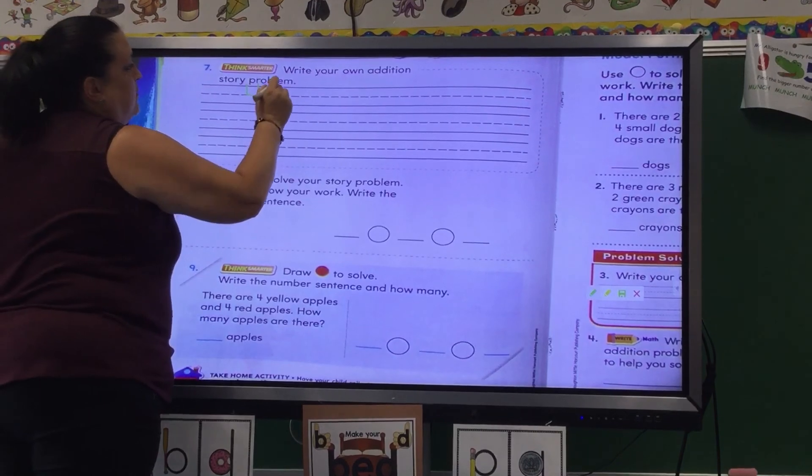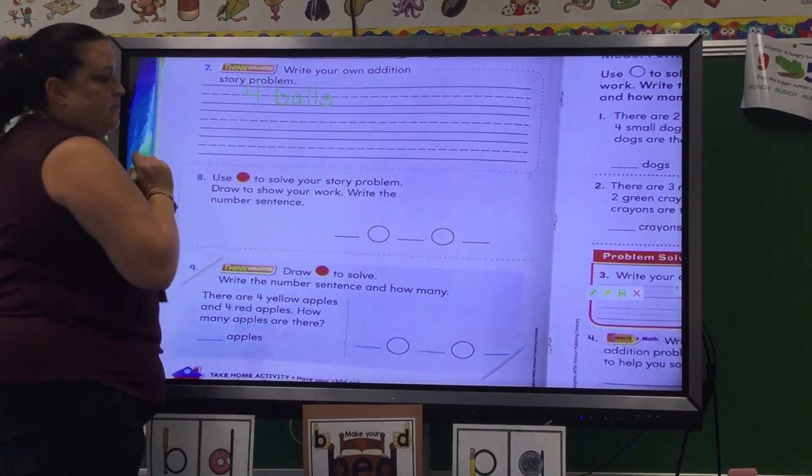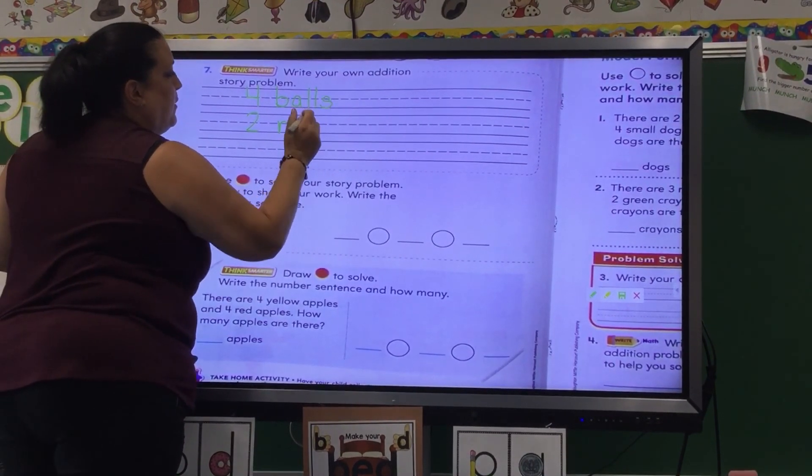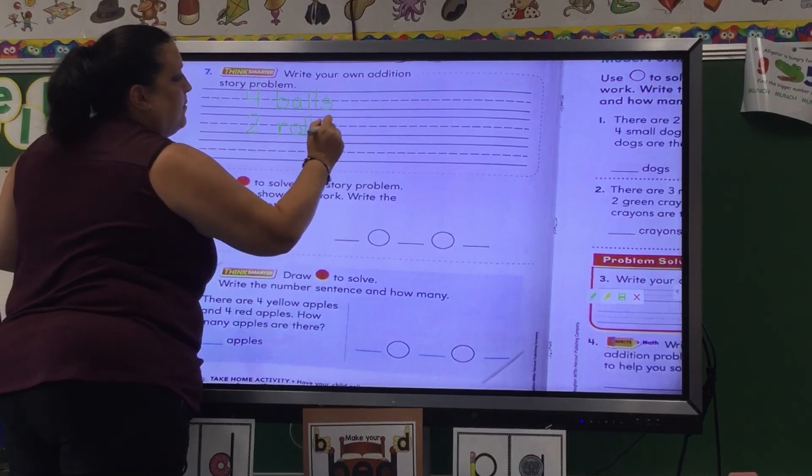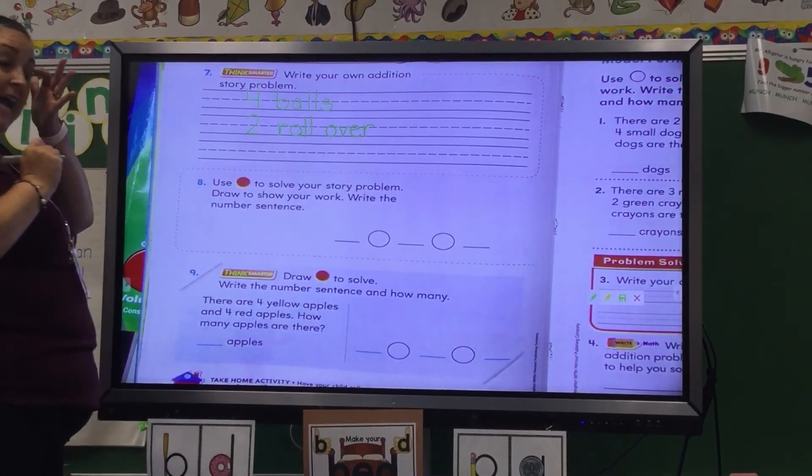Four balls. Two more roll over. Oh, whoops. I'm not spelling all right. Roll over. How many do we have all together?